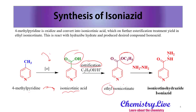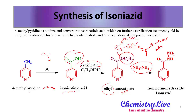From ethyl isonicotinate, a hydrazine reaction removes the OC₂H₅ group and replaces it with NH-NH₂. The mechanism involves the carbonyl carbon (C=O) being attacked by the lone pair of hydrazine via inductive effect; the ethoxy group is then eliminated and NH-NH₂ attaches, giving us the final compound isoniazide.